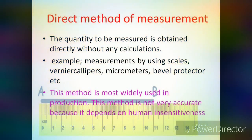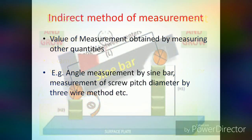Moving on to the first method — Direct Method of Measurement. The quantity to be measured is obtained directly without any calculation. For example, measurement by using scales, vernier caliper, micrometer, bevel protector, etc. I have provided an image as a background of this slide. I have drawn a line A to B and used a scale to measure the length of the line, giving a direct measurement. This method is most widely used in production, but it is very inaccurate due to human insensitiveness.